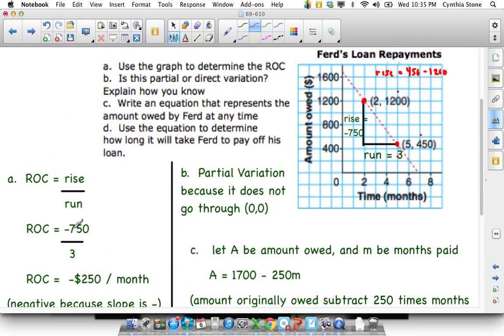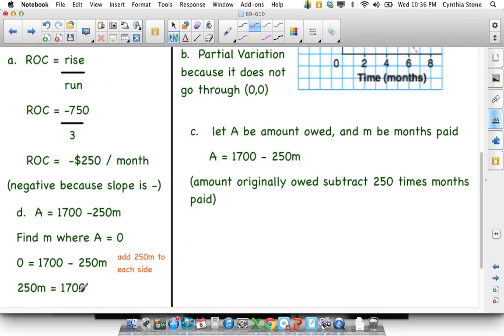It asks you, is it partial or direct? I know you guys are really good at this. It's partial because it does not go through zero zero. And that's how I know. Part C asks us, here's the question, write an equation.